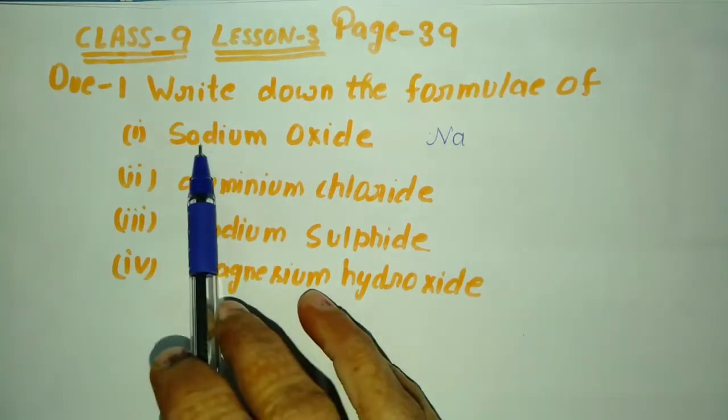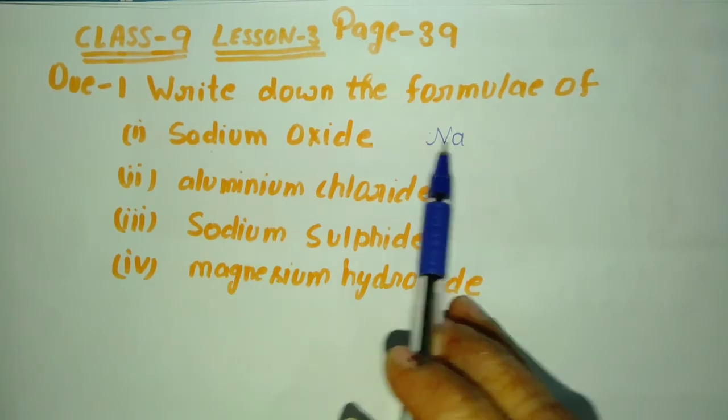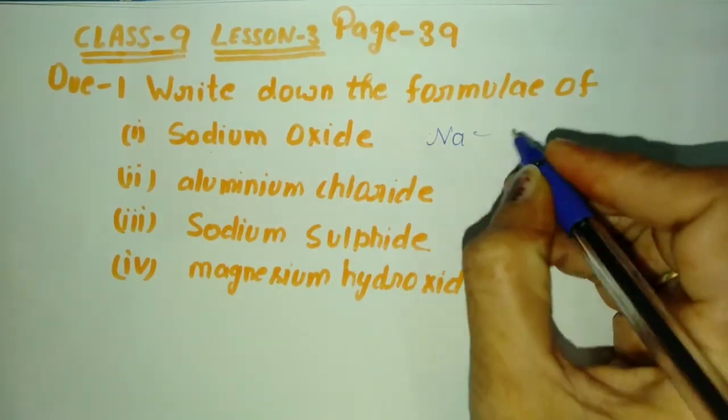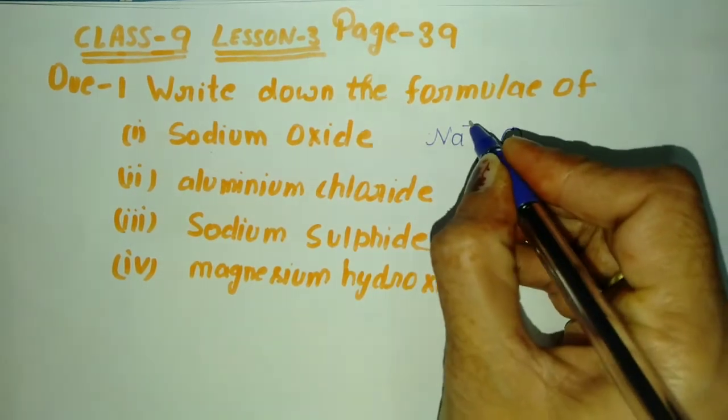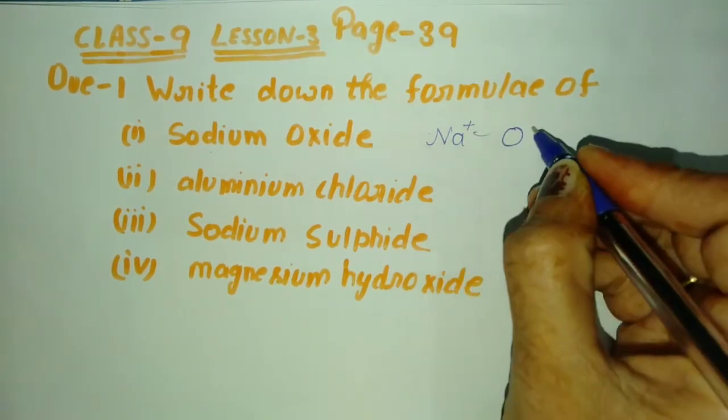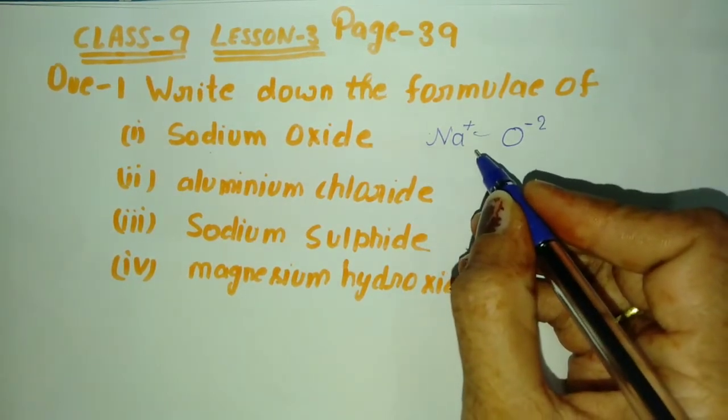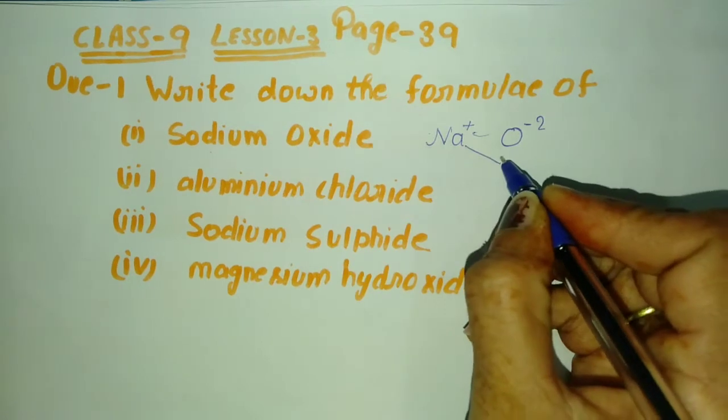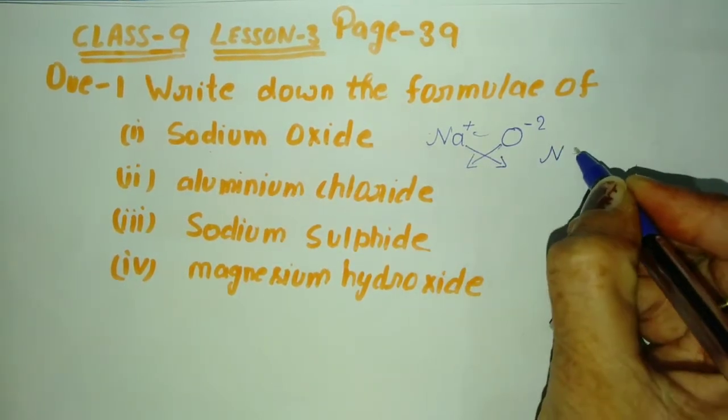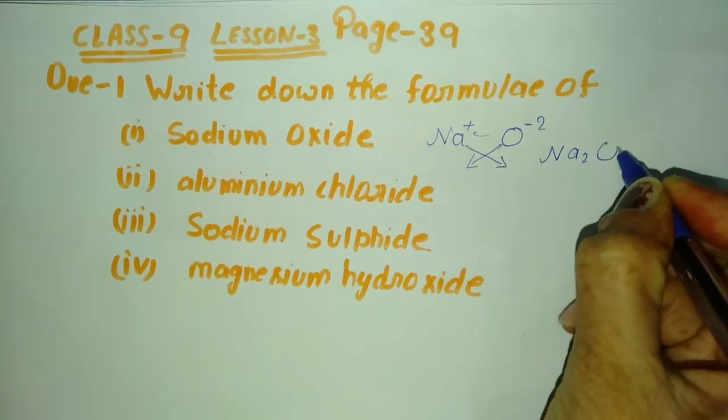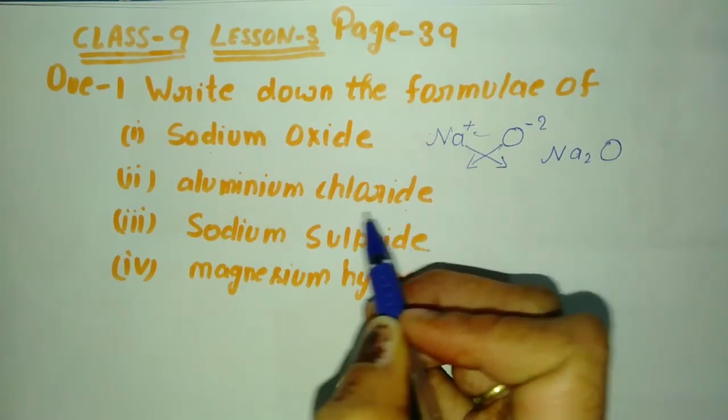First option: sodium oxide. Sodium is represented by Na and oxide means oxygen. Sodium has one positive charge and oxygen has minus two negative charge. We cross multiply and this formula will be Na2O.